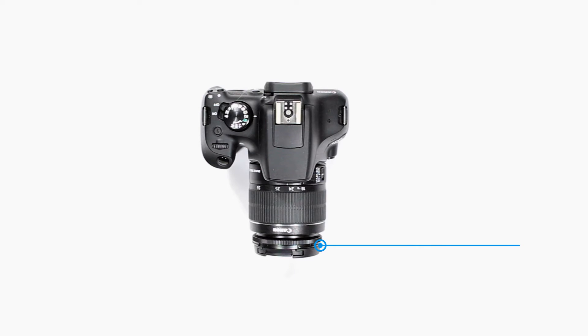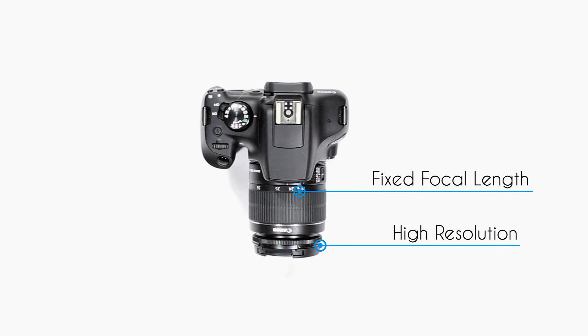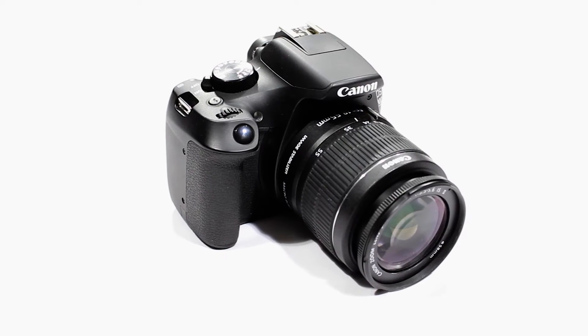There are a couple of conditions that, if you fulfill, will improve the quality of your 3D model drastically. First: high resolution — 8MP or more should be fine. Second: fixing the focal length of your lens. Third: manual mode.